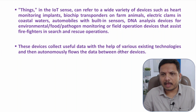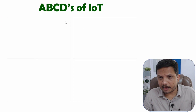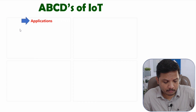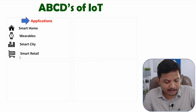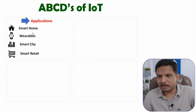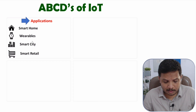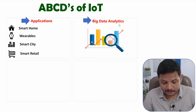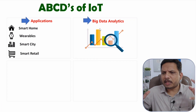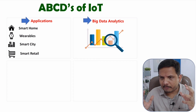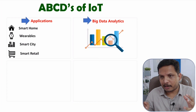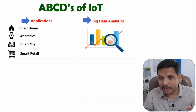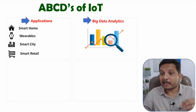Now I'll explain the ABCD of IoT. A stands for Applications — you can have smart home, smart watch, smart cities, and smart retail. There are many applications available on IoT devices. B stands for Big Data Analytics — with so many IoT devices there will be large amounts of data, and based on that data one can do relative comparisons, run algorithms, and optimize resources.